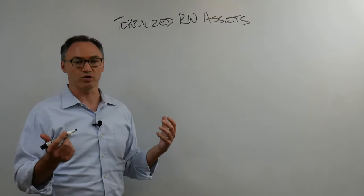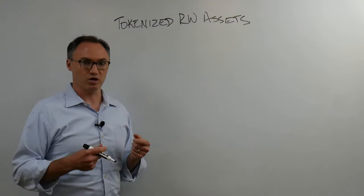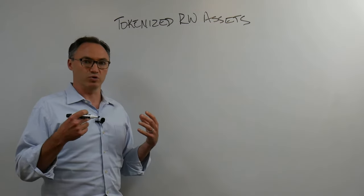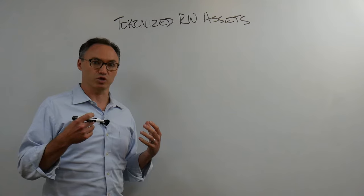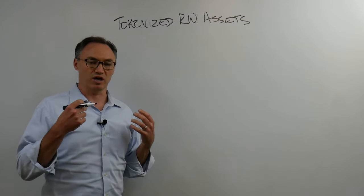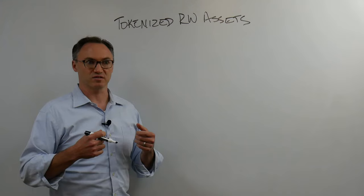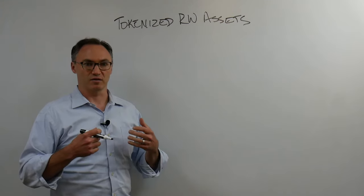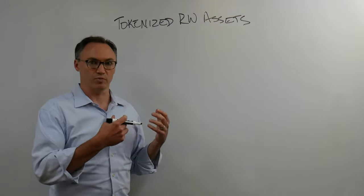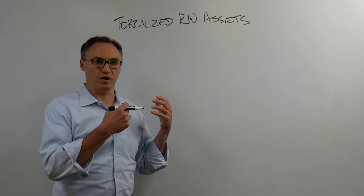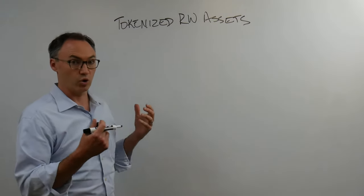So what do we mean when we say tokenizing real-world assets? This is where we start utilizing the blockchain — the plumbing, the infrastructure of it — and some of its characteristics to take real-world assets and transfer provenance, move ownership, or move other denotations of that asset on chain.